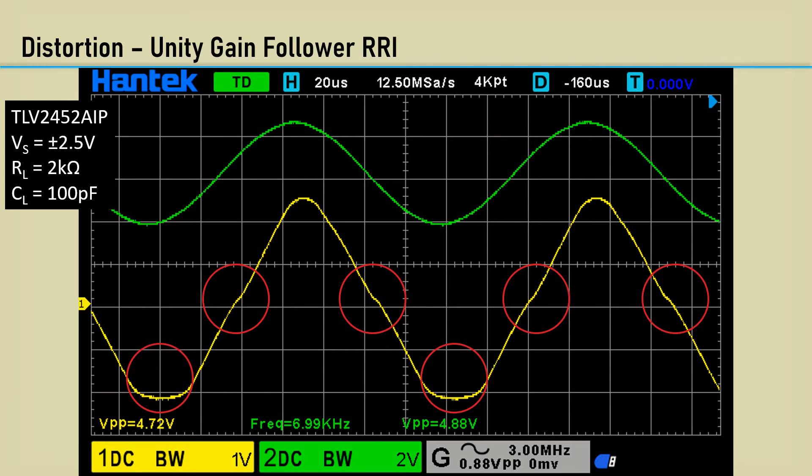I reduced the level to a small signal, and there is no noticeable crossover distortion. This distortion only occurs with a large input voltage span.